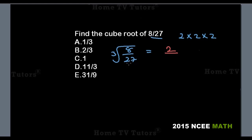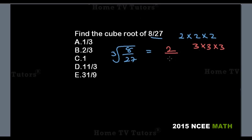For the cube root of 27, we look for a number that when multiplied 3 times gives 27. That number is 3, because 3 times 3 is 9, and 9 times 3 gives 27. So the cube root of 27 is 3, and the answer option B is the right answer.